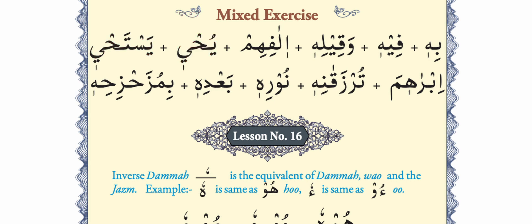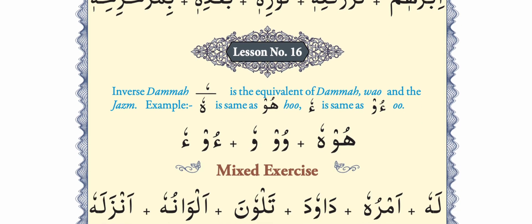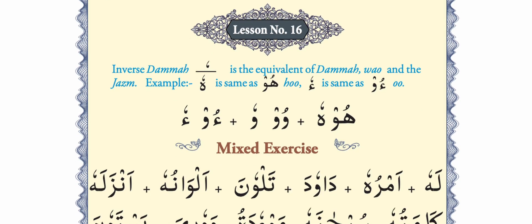Lesson number 16 gives us practice of inverse dhamma. The way we already learned that when a letter has dhamma and after it we see wow jazm, the sound of that letter is prolonged — in the same way, when a letter has inverse dhamma the sound is prolonged. I hope it is very easy to learn; that is why we are going faster.